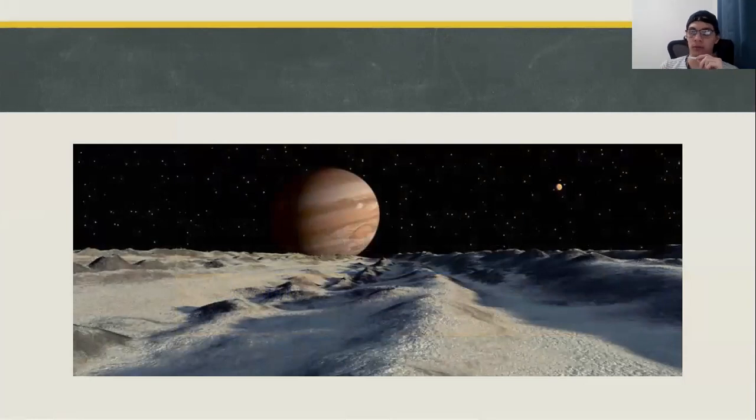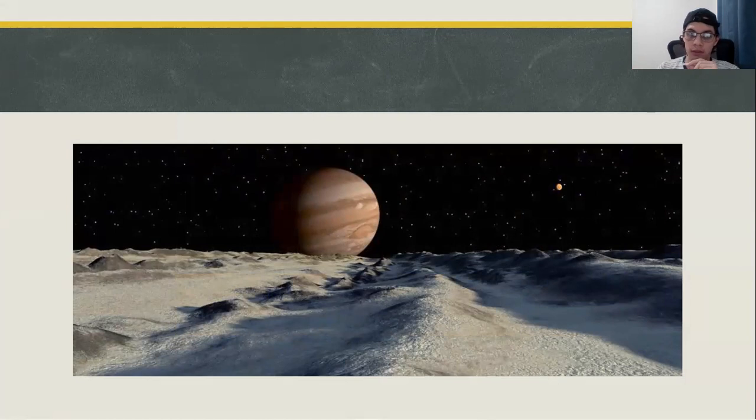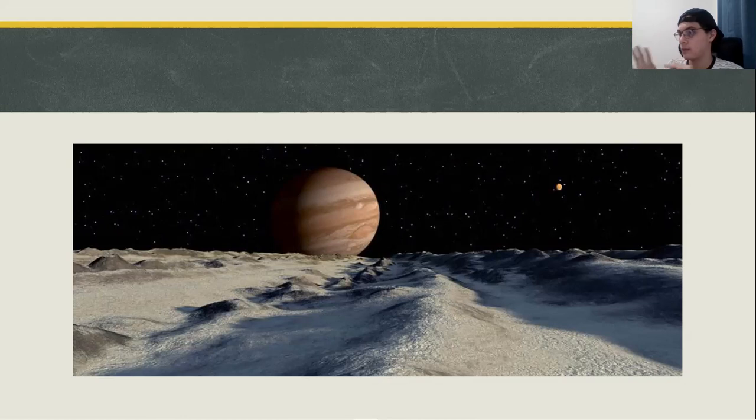Decades ago, science fiction offered a hypothetical scenario of alien life somewhere in the universe. Science fiction explored space travel, planets, stars, galaxies, everything far away from Earth. But what if alien life was thriving in an ocean beneath the icy surface of Jupiter's moon, Europa? Well, this idea is not so crazy.